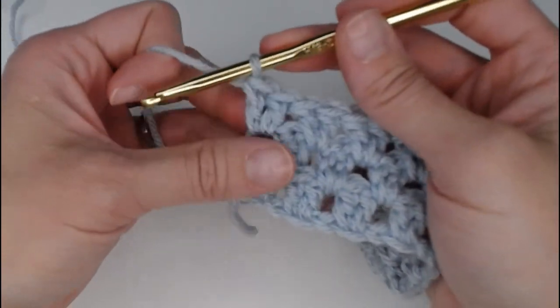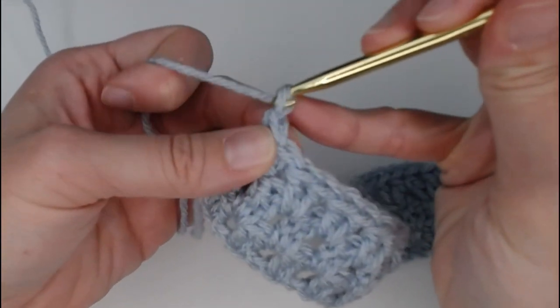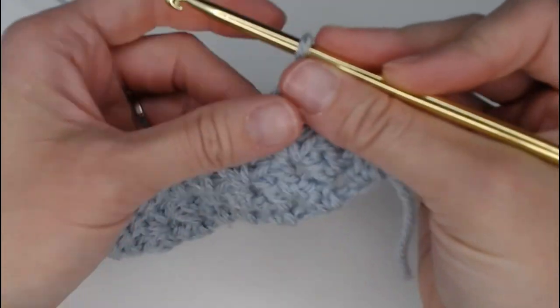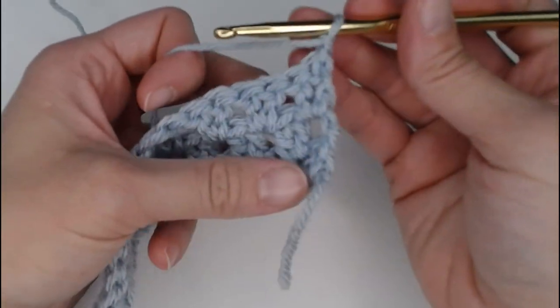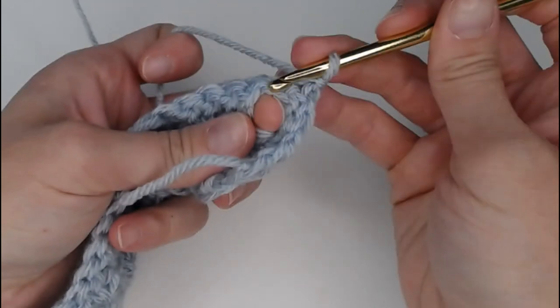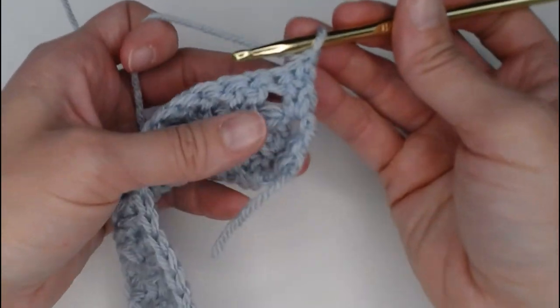Perfect! And that is all you do for this double crochet v-stitch pattern is just chain 1, turn your work, and continue to put 2 double crochets in the gap space between the groups of double crochets. That is it.